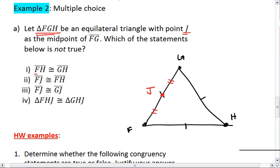So let's see, FH congruent to GH. Well, we have side FH and side GH, which we actually know are congruent because they're equilateral. So that statement is true. Let's say FJ congruent to FH. That one is not true. That one is false. But let's go through the rest and make sure that those are true.